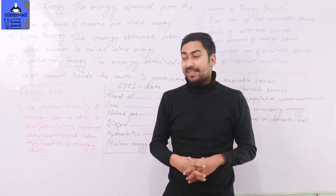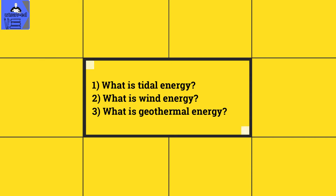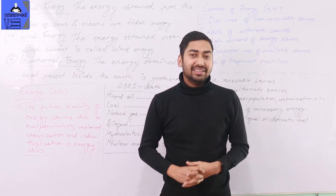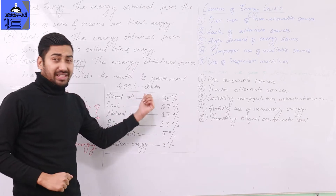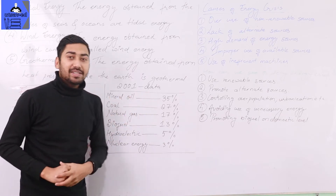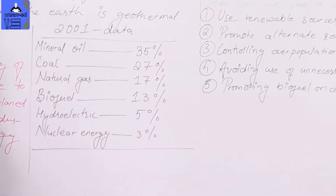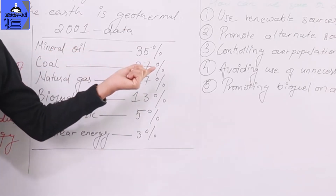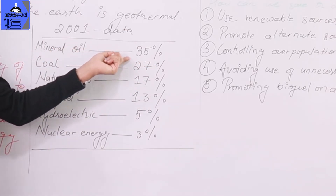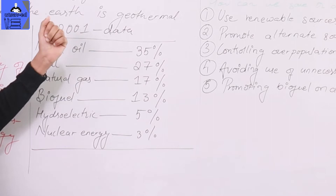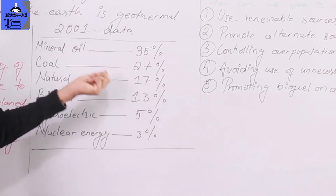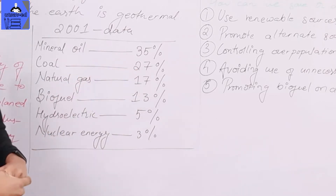These were the parts for the alternative sources of energy. Now let's begin with energy crisis. We are looking at world energy data from 2001 — what percentage is used and in which forms of energy. Mineral oil has a major share. According to the 2001 data, there have been changes since, but we can still use it as a reference.